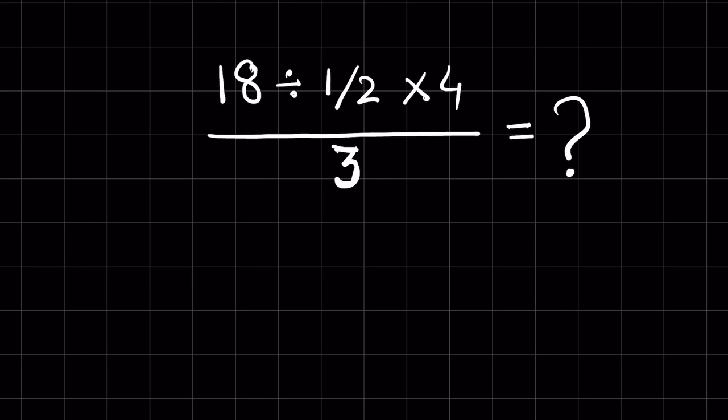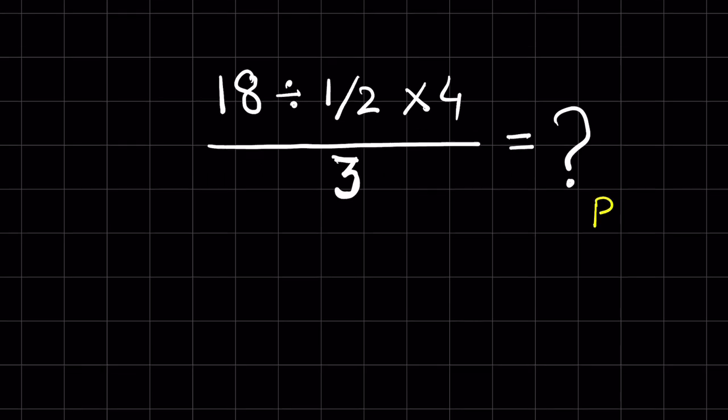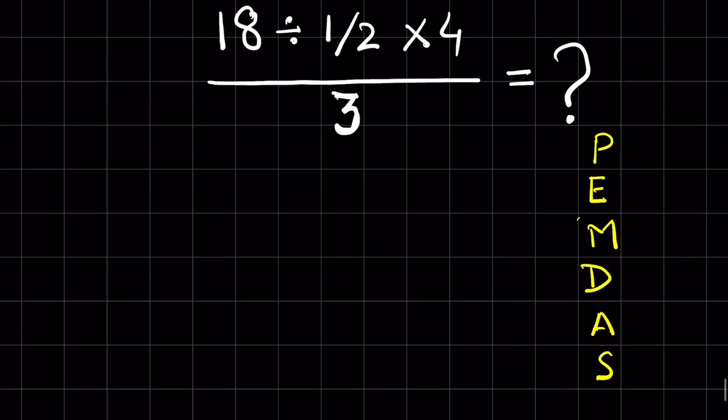18 divided by 1/2 times 4/3 - how to solve this? As per order of operations, we first solve parenthesis, then comes exponent, multiplication, division, addition, subtraction. But multiplication and division are grouped together and addition and subtraction are grouped together because they have equal priority.